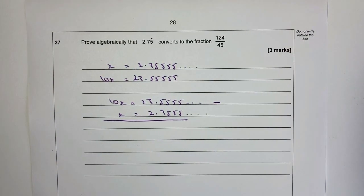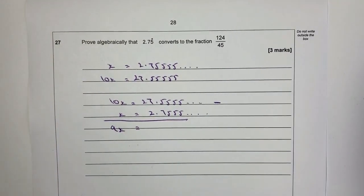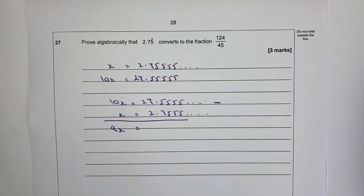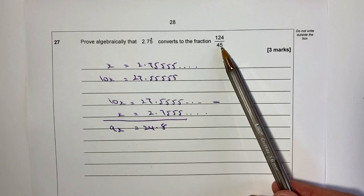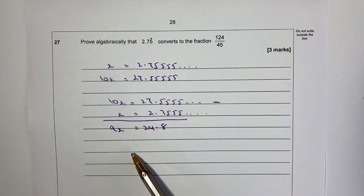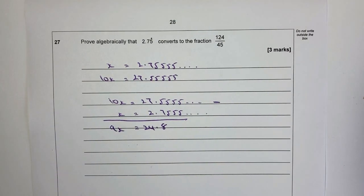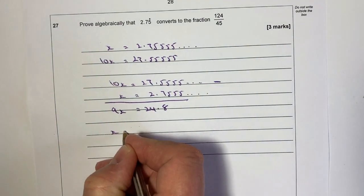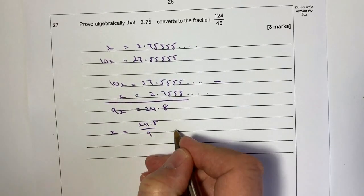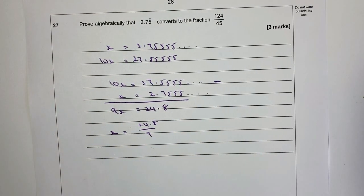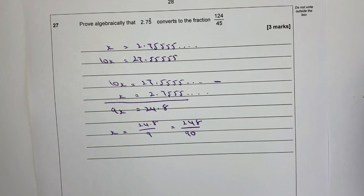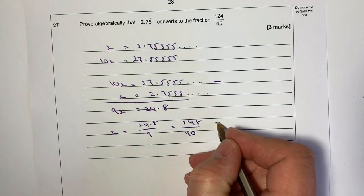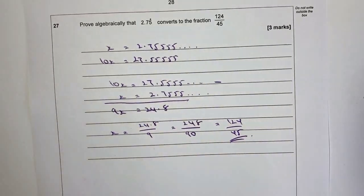So 9X equals 24.8. Dividing through by 9 gives X equals 24.8 over 9. To remove the decimal, I multiply top and bottom by 10 to get 248 over 90, then divide both by 2 to get 124 over 45. That answers the question. These sorts of recurring decimal proofs come up an awful lot in GCSE exams.